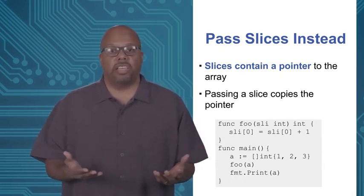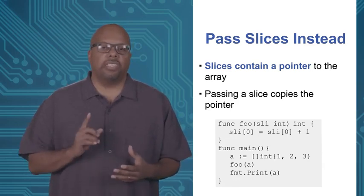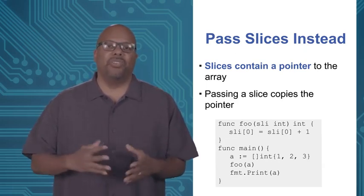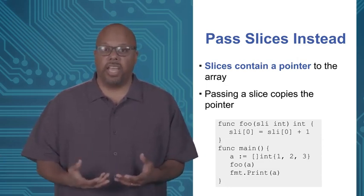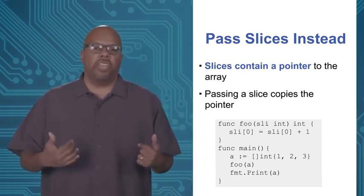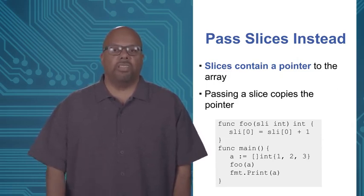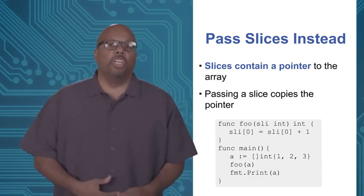Here's an example: this foo function takes a slice called sli — declared as sli []int, no size in the square brackets, which means it's a slice. It adds one to slice element zero. In main, instead of declaring an array, we declare a slice: a := []int{1, 2, 3} — the only difference is no size inside the square brackets. Then we call foo passing the slice a directly. It works exactly the same as the pointer example. When you print a, it will have incremented the first element from 1 to 2, printing {2, 2, 3}. In general in Go, use slices instead of arrays, especially when passing as arguments.